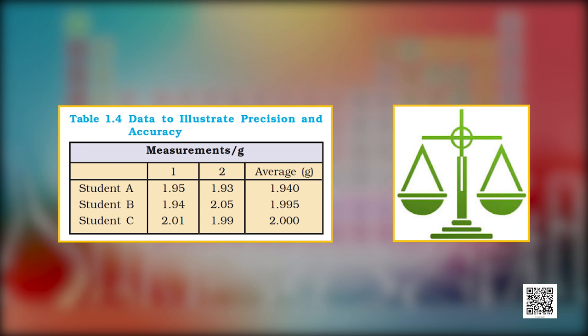Hence, we can say that precision refers to the closeness of various measurements for the quantity. However, accuracy is the agreement of a particular value to the true value of the result. Always remember, accuracy without precision can be a matter of chance. Friends, the certainty and uncertainty in a measurement is indicated through significant figures.